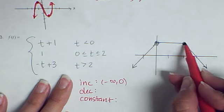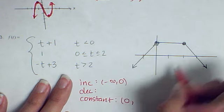Then at 0, it's straight, so it's constant from 0 all the way to 2.